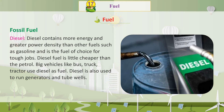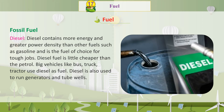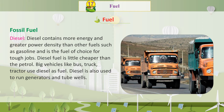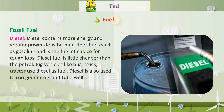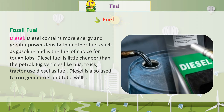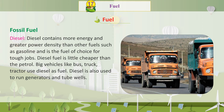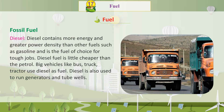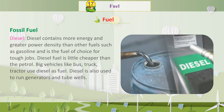Diesel contains more energy and greater power density than other fuels such as gasoline, and is the fuel of choice for tough jobs. Diesel fuel is a little cheaper than petrol. Big vehicles like buses, trucks, and tractors use diesel as fuel. Diesel is also used to run generators and tube wells.